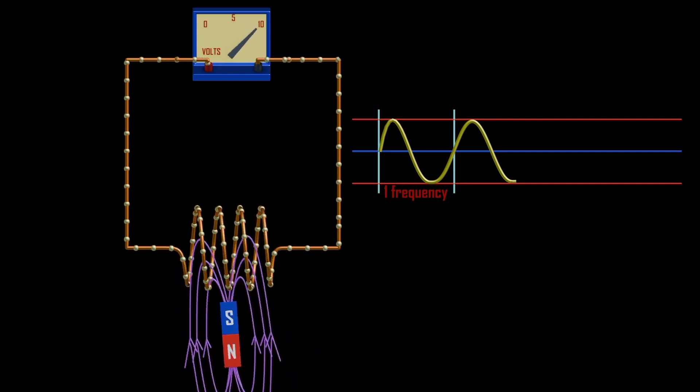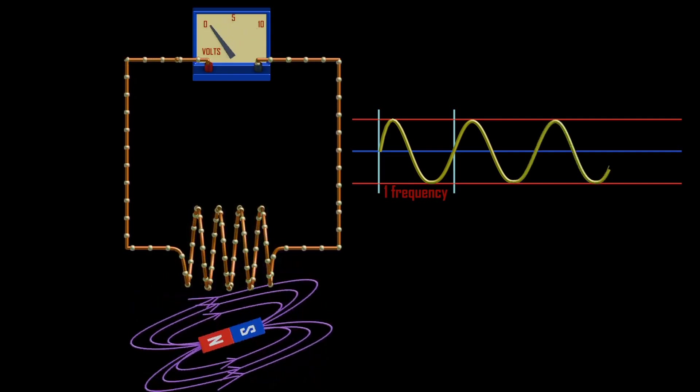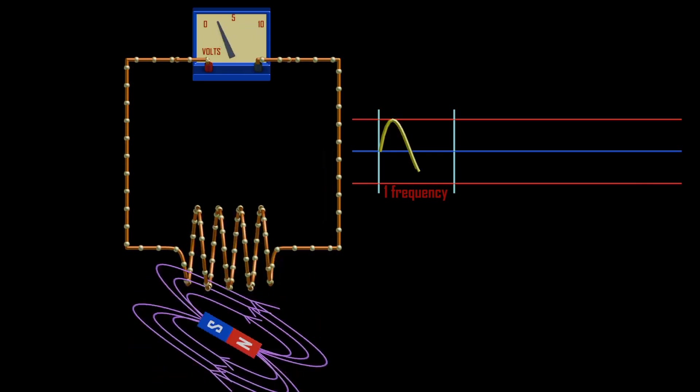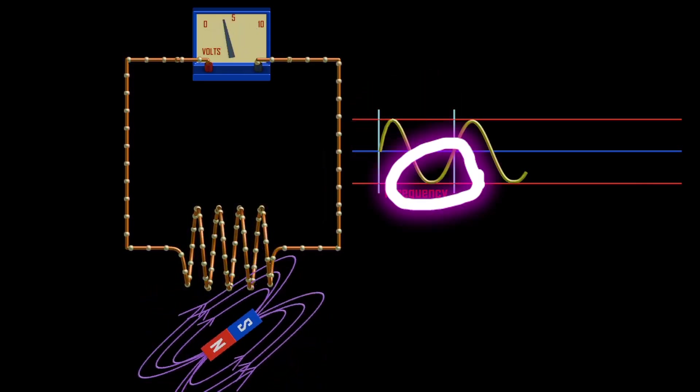But this time round the direction of the current reverses. So when we plot these values, we will form a sinusoidal waveform. With forward current plotted at the positive half, and the reverse current plotted at the negative half.